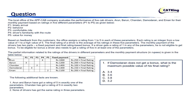The partial information related to the ratings of the drivers and the monthly payment structure is given in the table. The fixed payments are: Arun 1000, Barun 1200, Chandan 1400, Damodaran 1300, and Imam 1100 rupees. The bonus component is 250 times the final rating, which is the average of all 5 ratings. Additional facts: Arun and Barun have got a rating of 5 in exactly one parameter, and Chandan has got a rating of 5 in exactly two parameters.